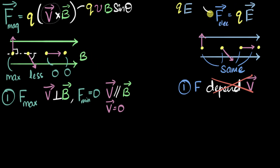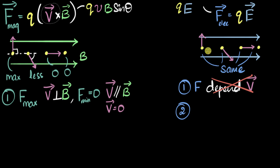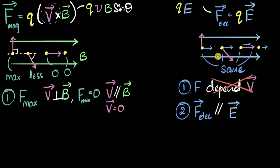Now let's look at their directions, starting with the electric field. The direction of the electric force will be in the same direction as the electric field if the charge is positive, and in the opposite direction if the charge is negative. So all four protons will experience the force in the same direction. The direction of the electric force will always be parallel to the electric field — same direction for positive charges, opposite for negative. If you know the direction of the electric field, you know the direction of the force.